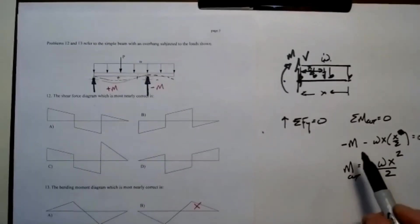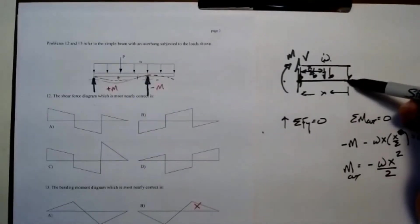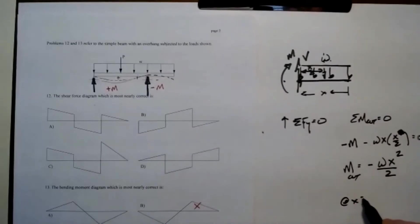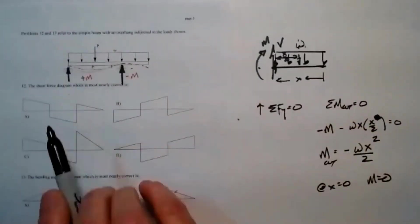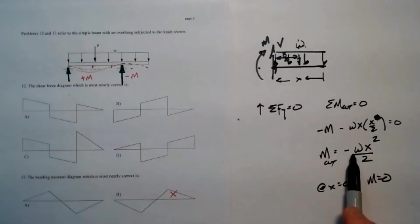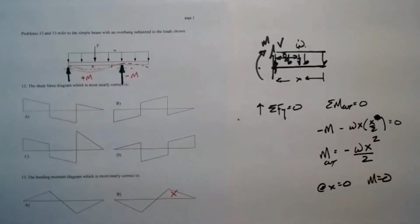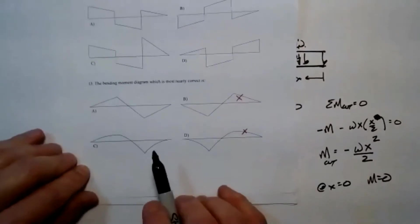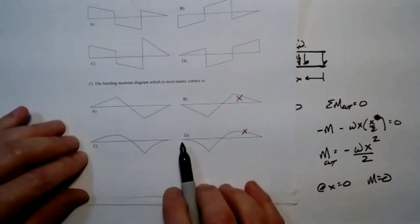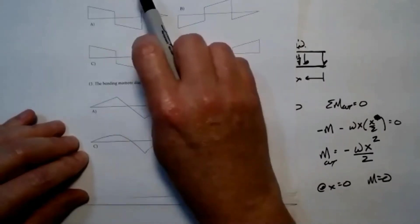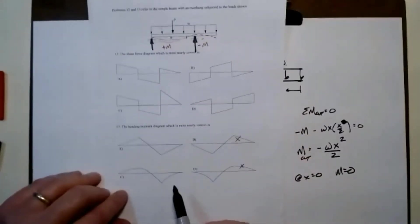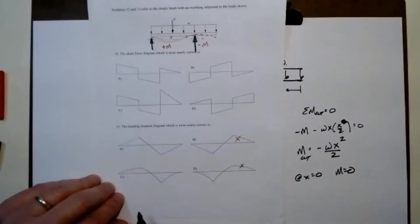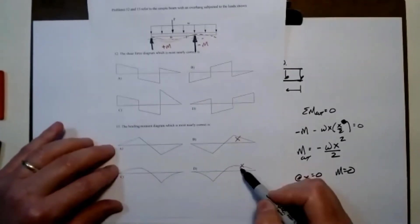So that's the moment at the cut. If this cut is right up against the end of this cantilever, my moment would be zero. And as I make my way towards the support, this magnitude is going to get more and more negative as a quadratic relationship. Now, that alone may be enough for us to decipher what the solution is going to be.